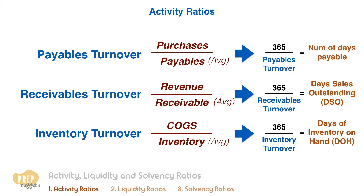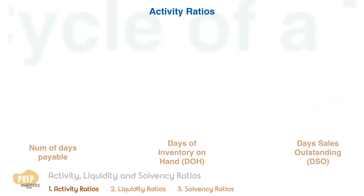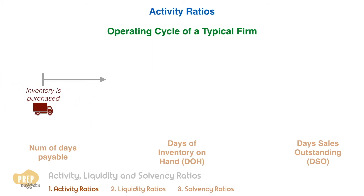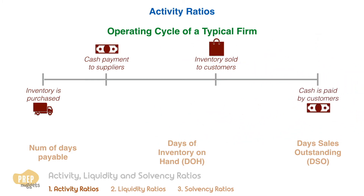To illustrate what all these days mean, let's look at a typical operating cycle of a firm. The cycle starts when inventory is purchased. Very often, the company buys the inventory on credit and the actual cash payment is made some time after. The inventory can either be sold to customers before or after the cash payment to suppliers. The customers may also be purchasing on credit and the actual cash payment is made some time later. Once cash payment is received from the customer, the operating cycle ends.